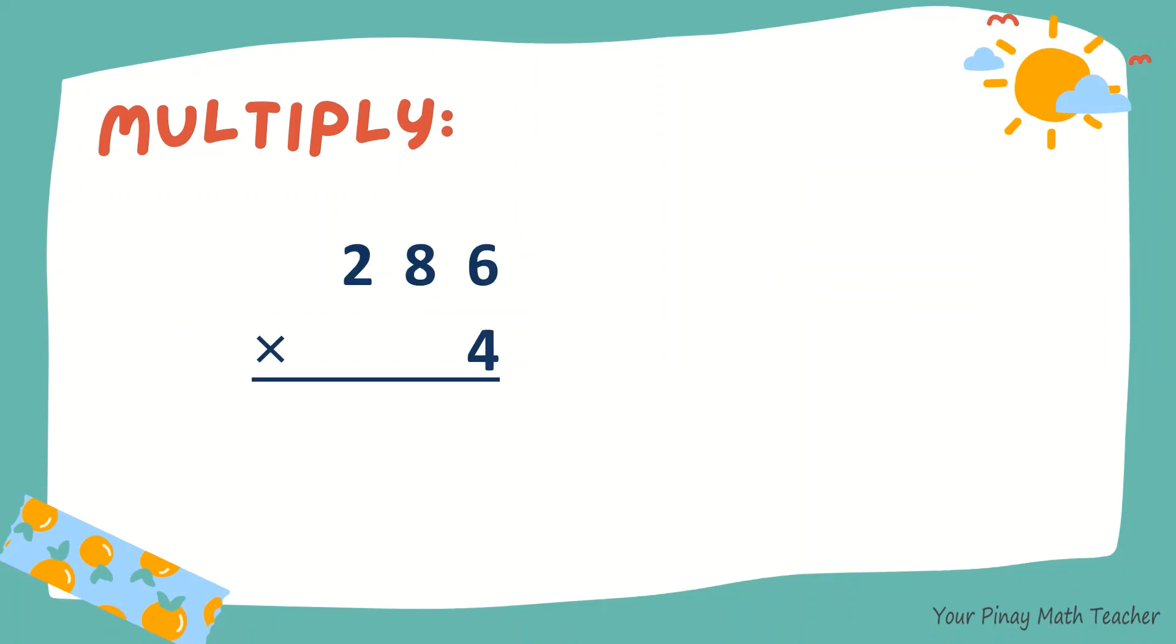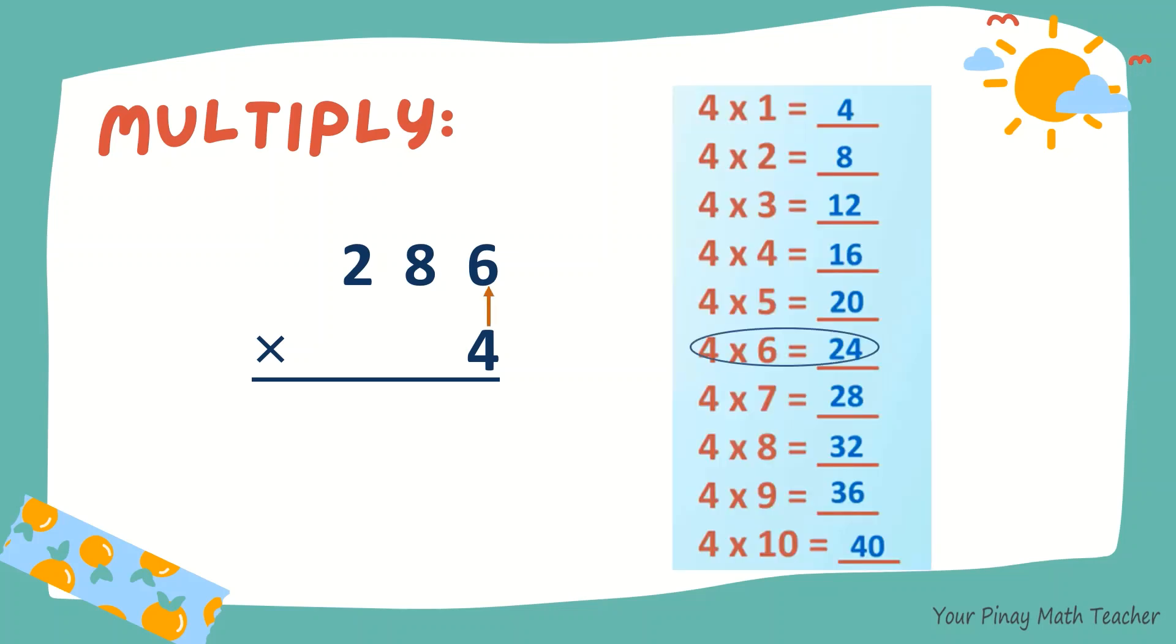Next, 286 times 4. 4 times 6 is 24. So 4, carry 2. 4 times 8, 32. Plus 2, 34.